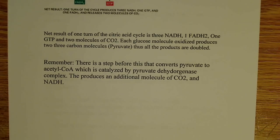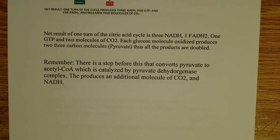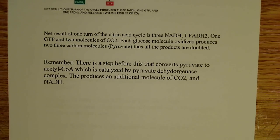I made a brief mistake — the final step is an oxidative reaction, but it's not an oxidative decarboxylation, so please excuse me for saying that. But regardless, as a net result you produce three NADH, one FADH2, one GTP, and two molecules of CO2. You should also recall that there's a step before this that converts pyruvate to acetyl-CoA, catalyzed by what's known as the pyruvate dehydrogenase complex — a group of enzymes that produce acetyl-CoA from pyruvate. This is another oxidative decarboxylation, so it produces CO2 and NADH — a very important process.